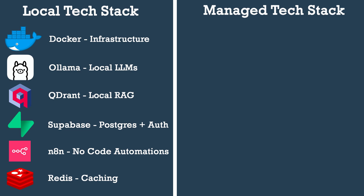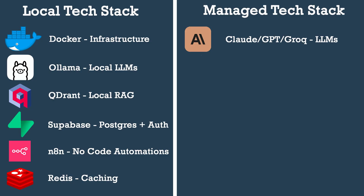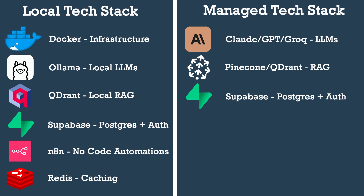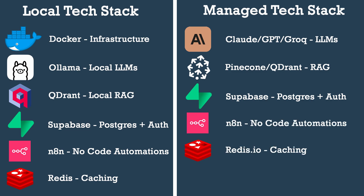For the managed services tech stack, a lot of the names look quite similar, and there's a good reason for that. Starting with the LLM, you have Claude, GPT, or Grok — it really depends on your use case. Then Pinecone or Qdrant for the vector database, hosted Supabase for Postgres and authentication, and again you can use PGVector to replace Pinecone or Qdrant for RAG. Then Cloud N8N for no-code workflow automations, and Redis.io for hosted Redis caching.